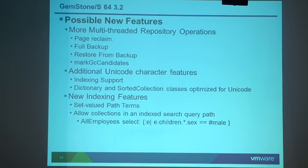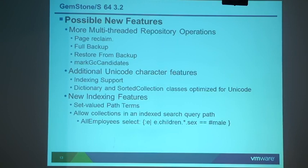Some new indexing features we'd like to see — not sure if they'll make it into 3.2 — include something called set-valued path terms, which means one of the objects along an indexed path is a collection. For example, you have all employees, and then a children collection since someone may have zero or more children, and you search that collection matching on a field. Right now you can't do that cleanly in GemStone — there are workarounds using other collections and dictionaries, but this would be a cleaner approach.